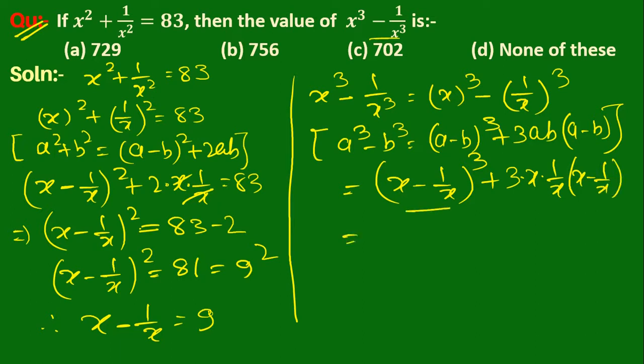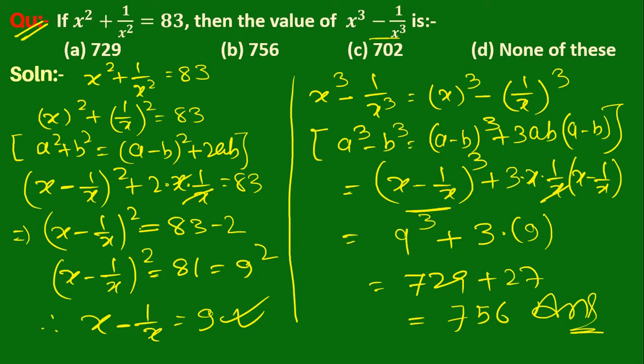Substituting the values: 9³ plus x and x cancel, giving 3·9. So 9³ is 729 plus 27 equals 756. Therefore option B is the correct answer.